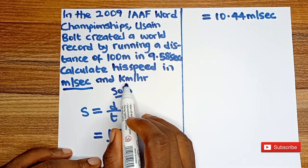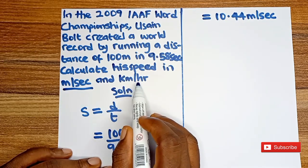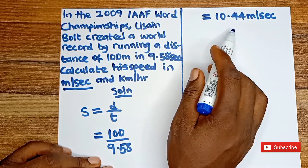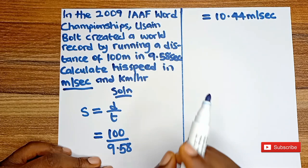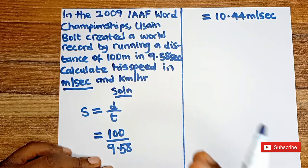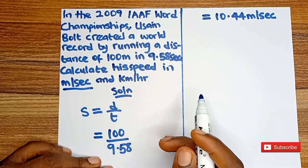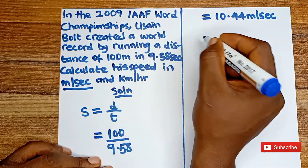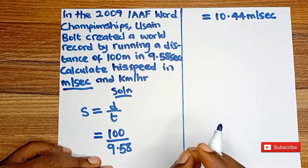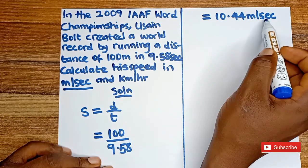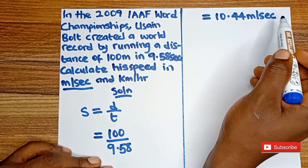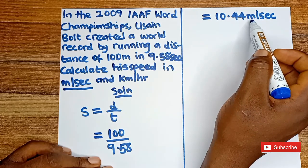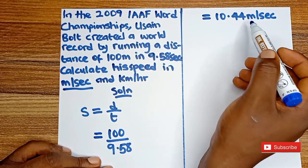The second answer we are supposed to get is in kilometers per hour. So we've gotten the answer in meters per second, and now we are going to convert meters per second to kilometers per hour. We are going to multiply by 3600 in order to convert seconds to hours, and we are going to divide by 1,000 in order to convert meters to kilometers.